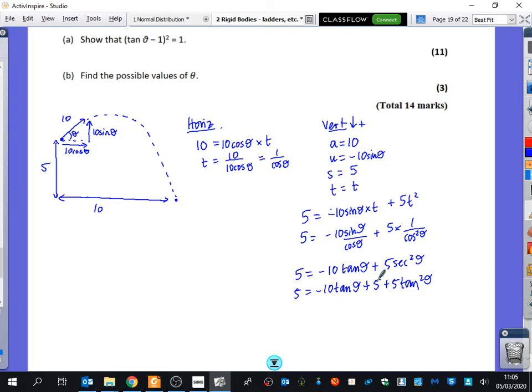Divide everything by 5. Oh, I can cancel the 5s from both sides actually. So I've now just got 0 equals 5 tan squared theta minus 10 tan theta. Is that right? Yeah. Good. And then I can divide by 5. So I get tan squared theta minus 2 tan theta equals 0, which is what the same as that thing is going to be.